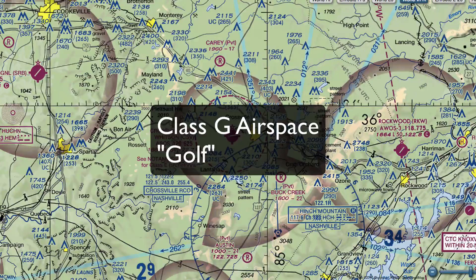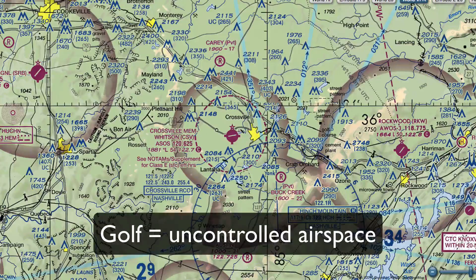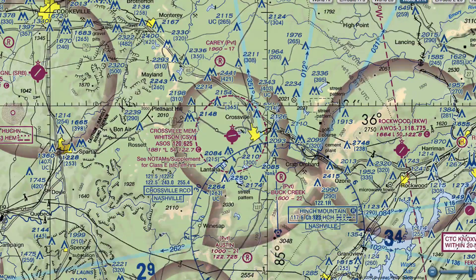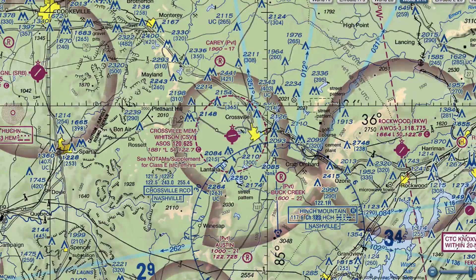Below this area, from the surface to 699 feet, is Class G, Golf airspace. Golf airspace is uncontrolled airspace that does not require ATC authorization to fly in. Granted, there still could be other flight restrictions, but in terms of ATC authorization, you're fine.